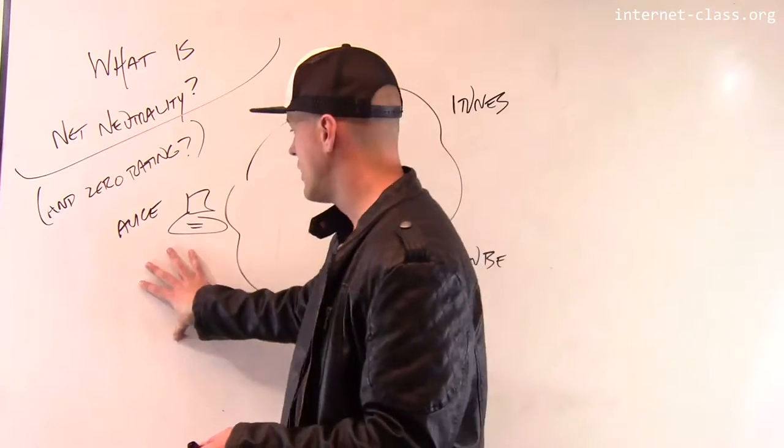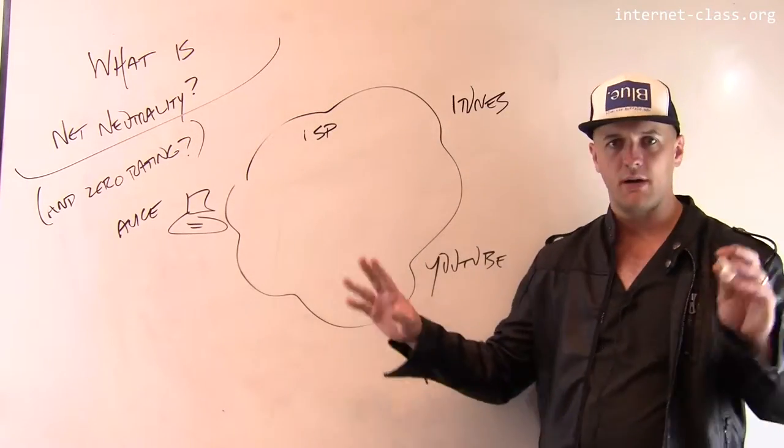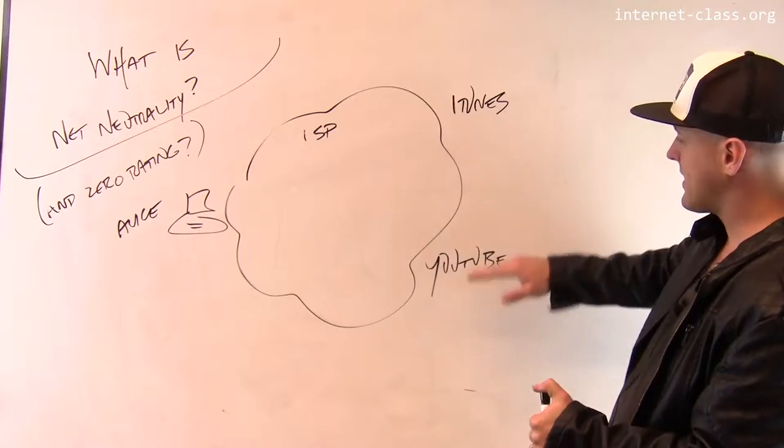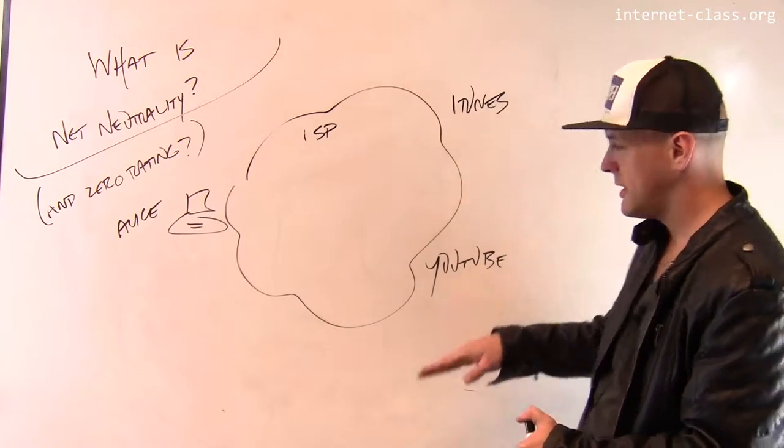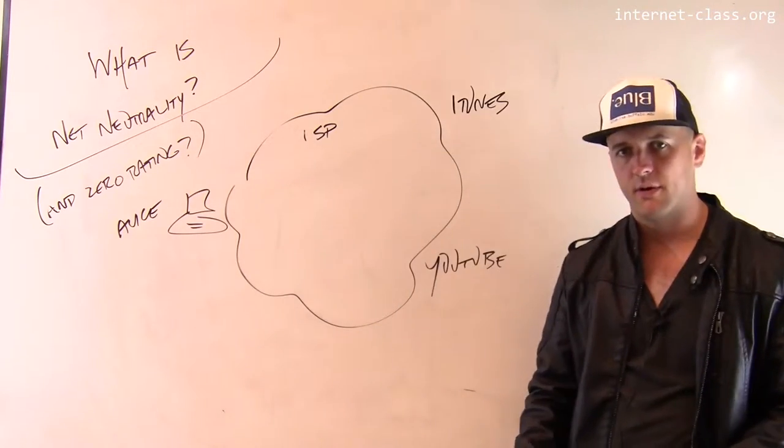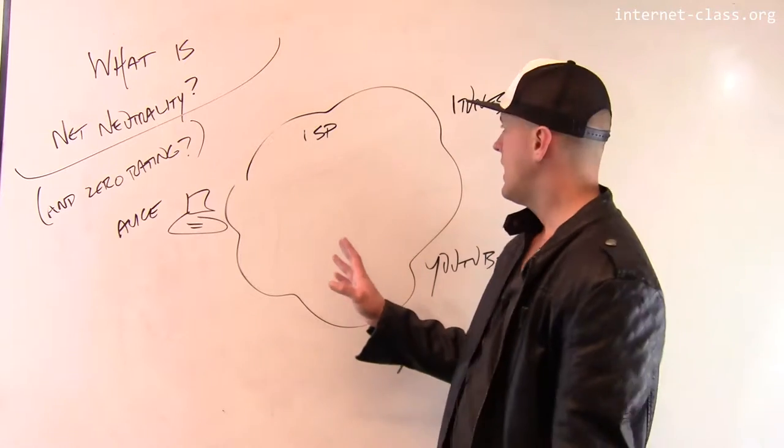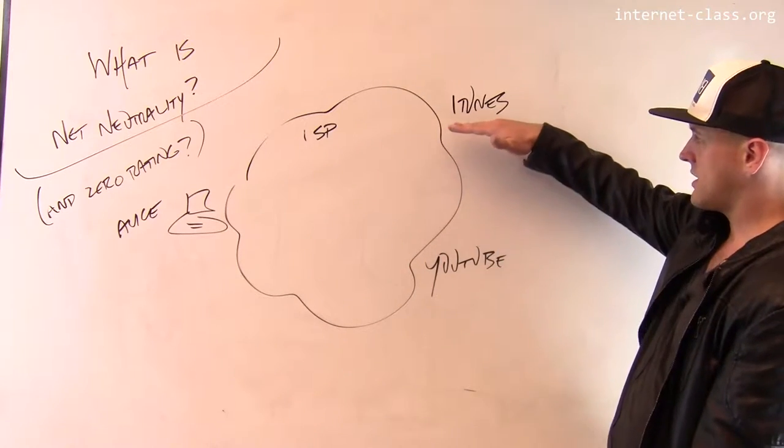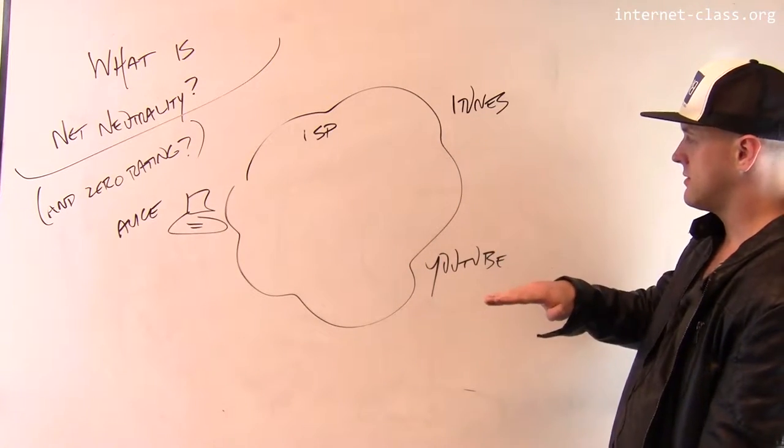So let's imagine that Alice wants to watch a movie on her computer. Pretty normal thing to do. And she found that movie both on iTunes and YouTube, and the movie's the same price. So there's no price differentiation here. She's trying to make a decision about whether or not she's going to stream the movie from iTunes or YouTube.